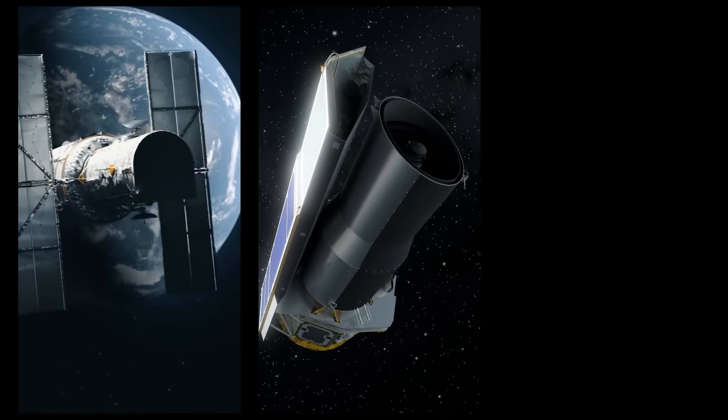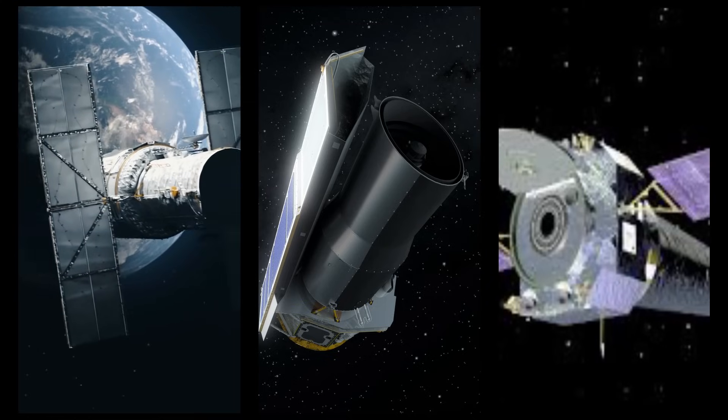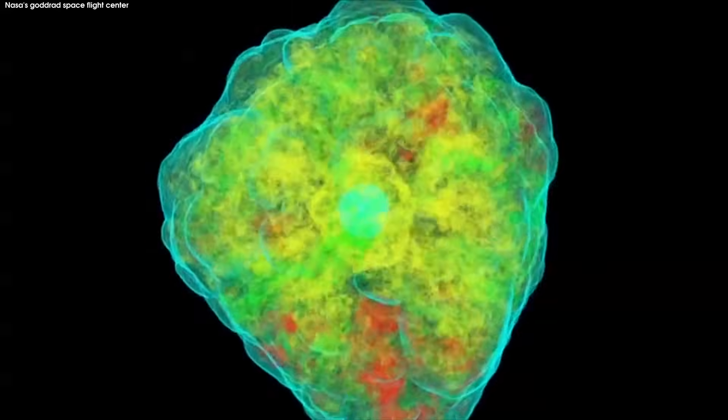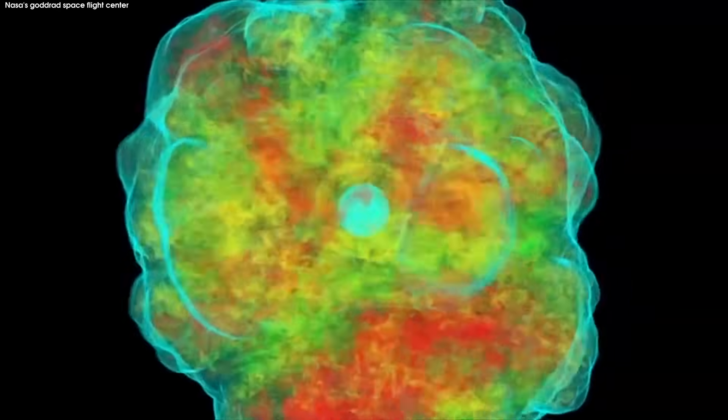Previously, the Hubble Space Telescope, Spitzer Space Telescope, Chandra X-ray Observatory, and other telescopes had imaged Cas A. Chandra's study revealed the amounts of different elements produced by the explosion.